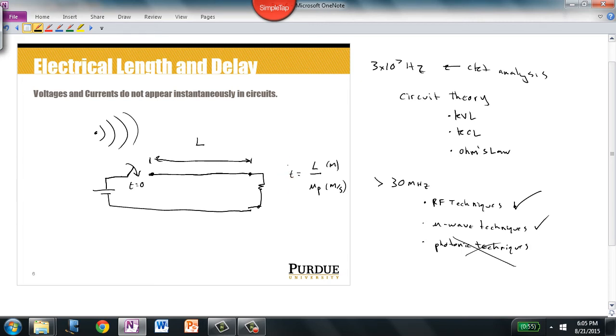When the switch is closed, a voltage and current waveform propagates from A to B, taking some time. We usually ignore these effects, but they become more important at high frequencies.